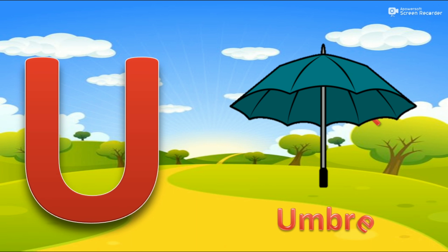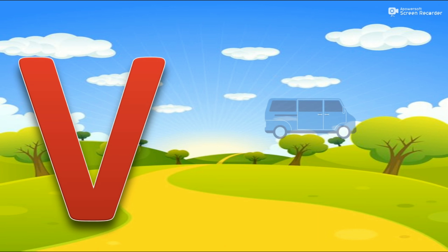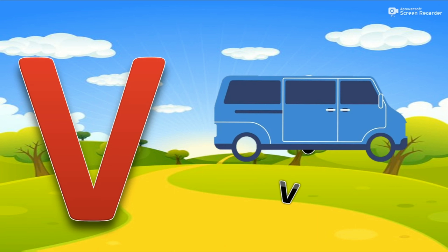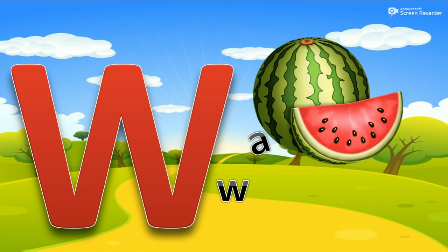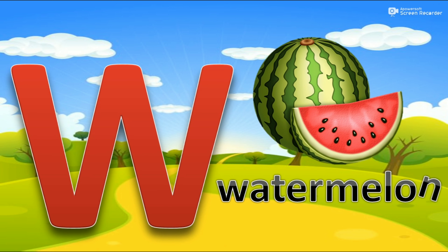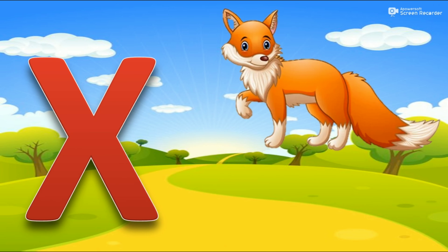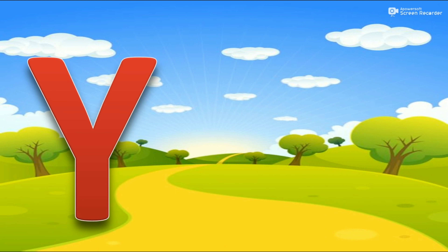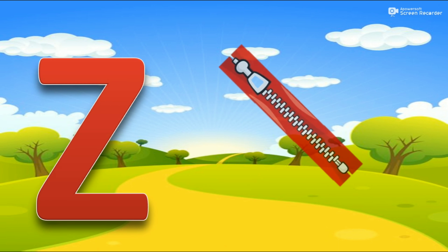U for umbrella. V for van. W for watermelon. X for fox. Y for yo-yo. Z for zipper.